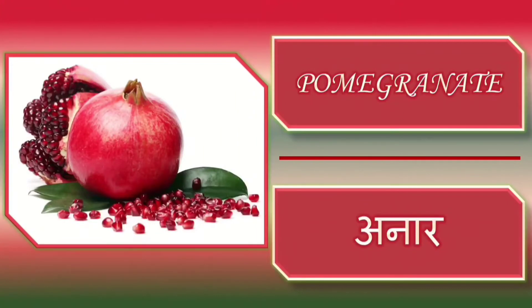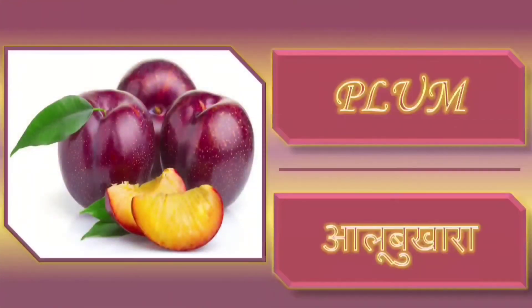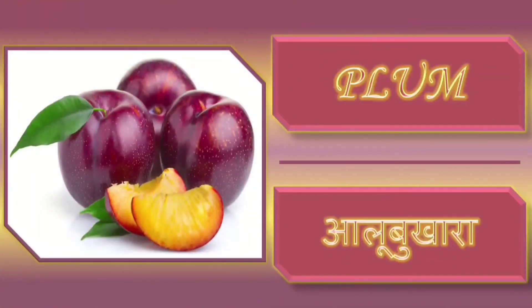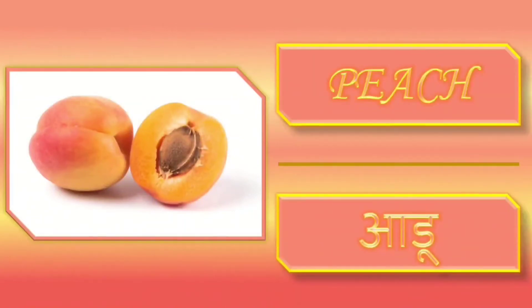Pomegranate — pomegranate means ananas. Guava — guava means amrut. Plum — plum means alubukhara. Peach — peach means aadu.